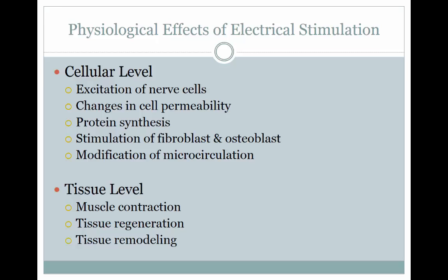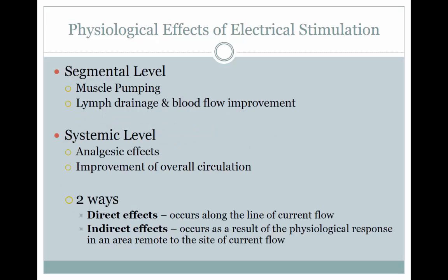At a tissue level, the application of electrical stimulation results in frequent muscle contractions, tissue regeneration, and increased tissue remodeling. At a segment level, the application of electrical stimulation results in a muscle pumping action, lymphatic drainage, and a blood flow improvement. By segment, we are usually talking about a body part, such as an arm or a leg. At a systemic level, the application of electrical stimulation results in analgesic effects and improvements of overall circulation.